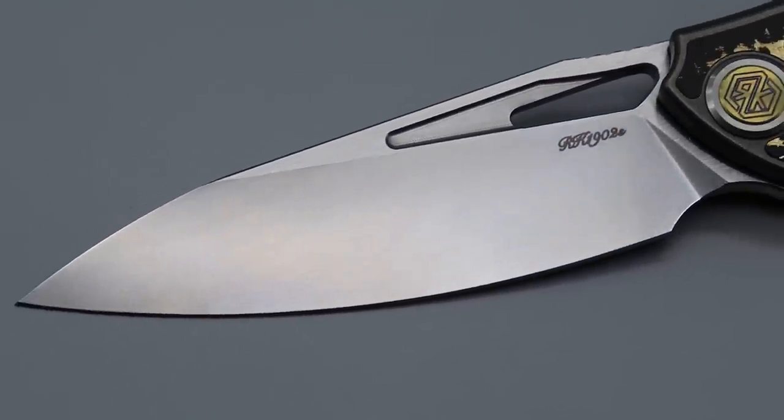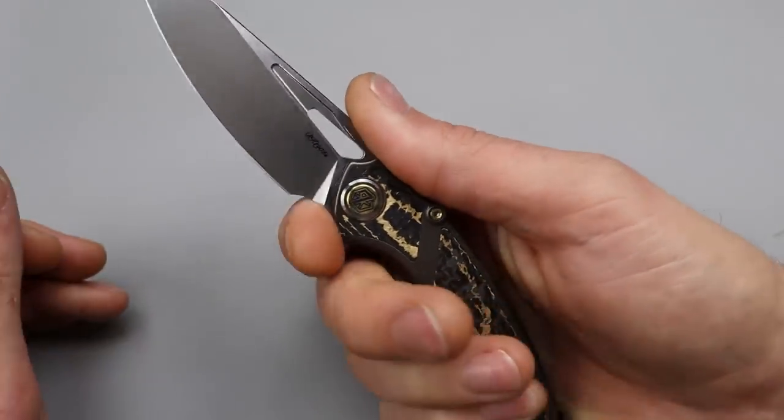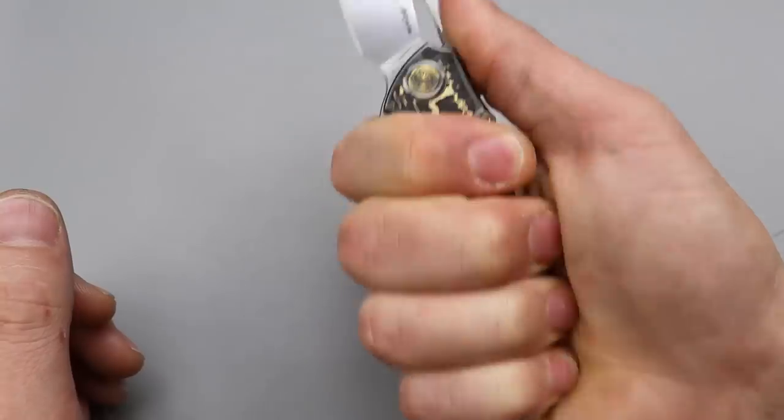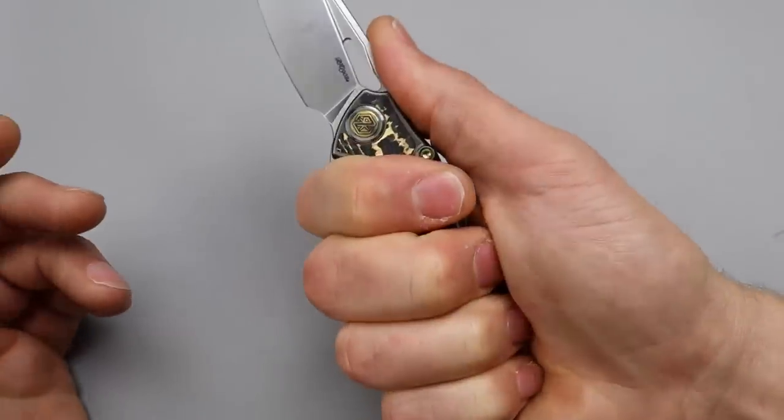Beautiful drop point blade, sharpening choil is perfect. It is a small finger choil. It's not a full finger choil, but it allows you to get a full four finger grip. Back here, I can still get a full four finger grip, but it is a little tight because it's not a large knife.